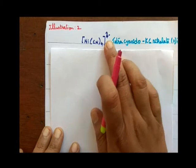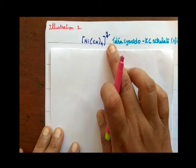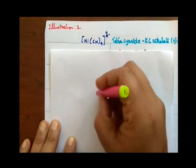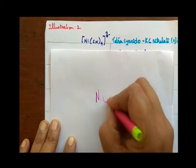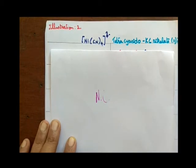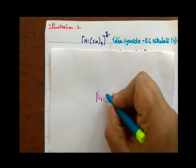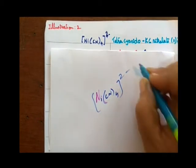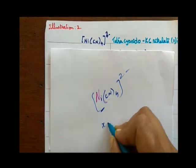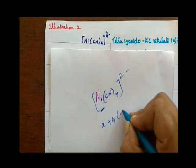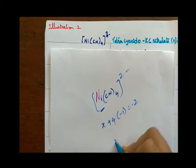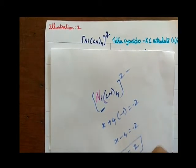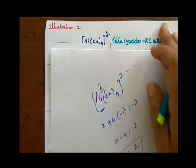This is the given question. Actually in the book it is 4 minus, but the charge is 2 minus — [Ni(CN)₄]²⁻. So, setting up the oxidation state calculation: x plus 4 times (−1) equals −2, which gives x − 4 = −2, so x = +2. Therefore, nickel is in the oxidation state +2.